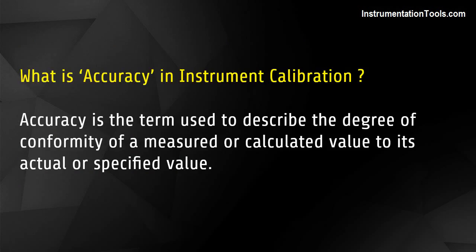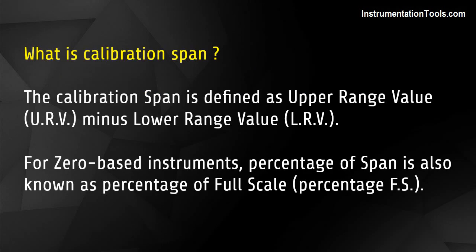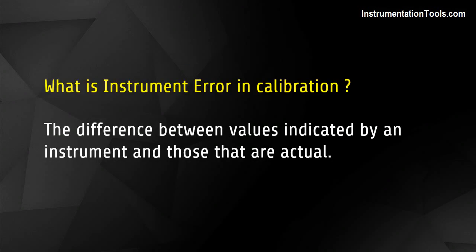What is accuracy in instrument calibration? Accuracy is the term used to describe the degree of conformity of a measured or calculated value to its actual or specified value. What is calibration span? The calibration span is defined as upper range value (URV) minus lower range value (LRV). For zero-based instruments, percentage of span is also known as percentage of full scale (%FS). What is instrument error in calibration? It is the difference between values indicated by an instrument and those that are actual.